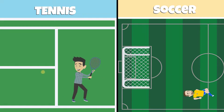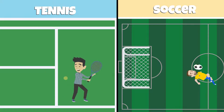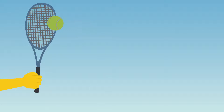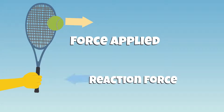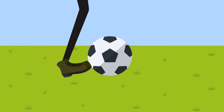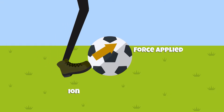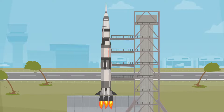We can also see this in sports, such as tennis and soccer. The greater the force applied on a tennis ball, the more reaction force your arm receives from the racket. The same is true for soccer — as the player exerts force on the soccer ball when it is kicked, the soccer ball also exerts a force on the player's foot.